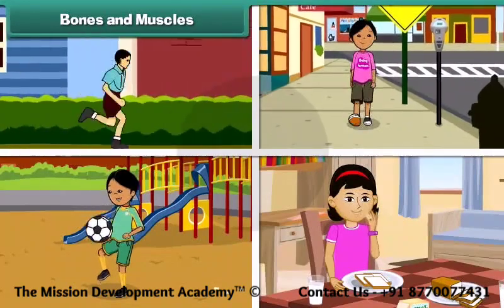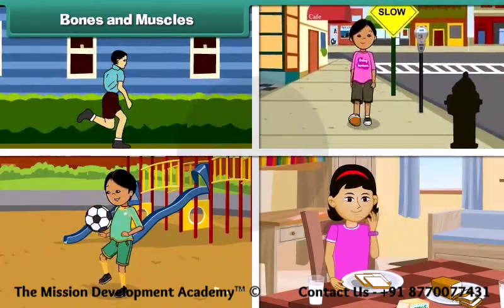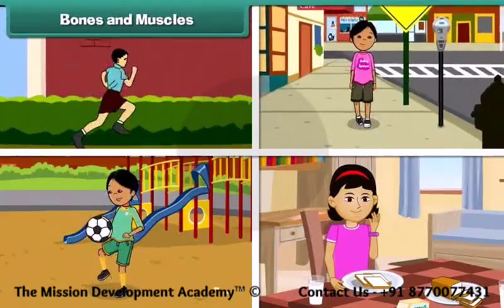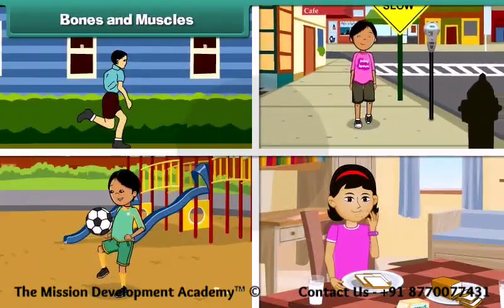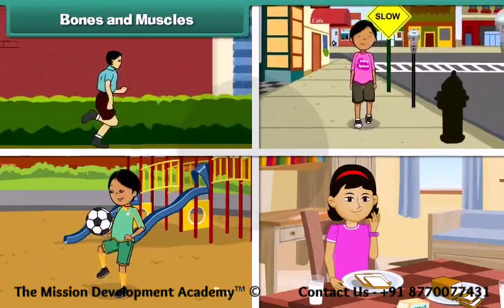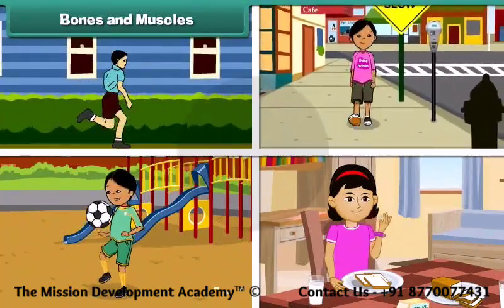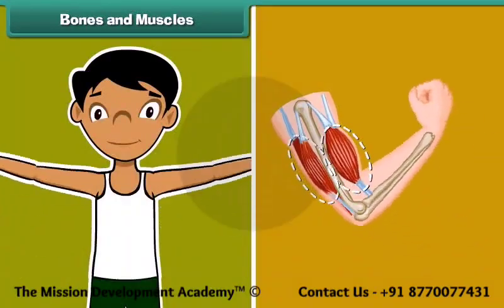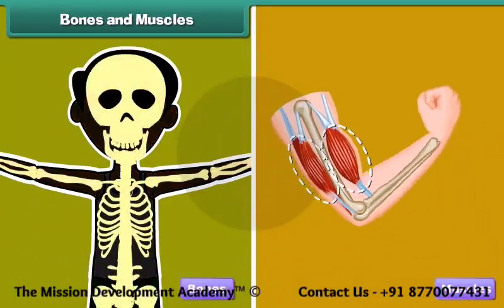Bones and muscles. Running, jumping, walking, moving, folding hands, swinging legs, etc. are activities that involve movement of organs of the human body. All these activities are made possible by bones and muscles.